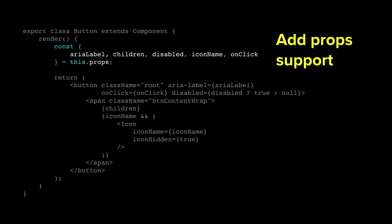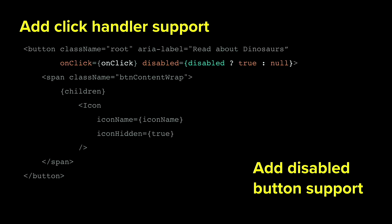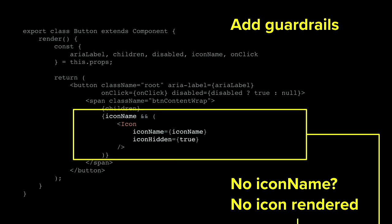For prop support we add click handler support and disabled button support. The disabled attribute uses a true-or-null pattern because that's how it renders in HTML. And the one guardrail we need here: if someone doesn't pass in an icon name at all, the icon doesn't render in the button.